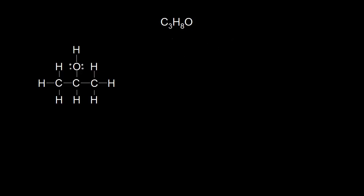Let's say we're given the molecular formula C3H8O and we're asked to draw a Lewis dot structure. On the left here is one possible Lewis dot structure that you can draw with that molecular formula. There are three carbons, one oxygen, and if you count up the hydrogens, you will get eight. This Lewis dot structure shows all of the bonds drawn in.